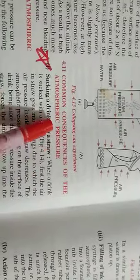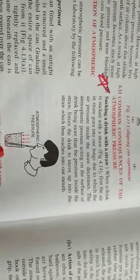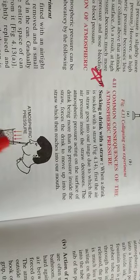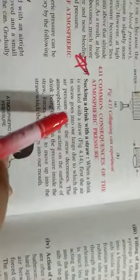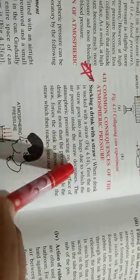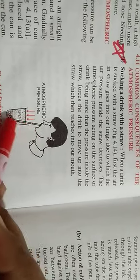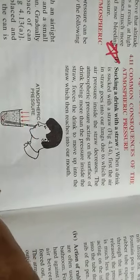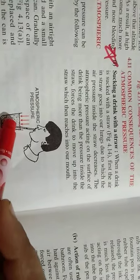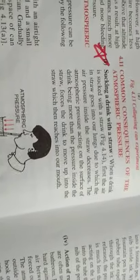After that, common consequences of atmospheric pressure. Where do we normally see the effect of atmospheric pressure? First, sucking a drink with a straw. When we drink any cold drink with the help of a straw, when we suck it, the entire cold drink goes through the straw into our mouth. When a drink is sucked with a straw, first the air in the straw goes into our lungs due to which the air pressure inside the straw decreases. The pressure inside straw becomes less and atmospheric pressure is more, so with this pressure the cold drink rises inside the straw and directly into our mouth.